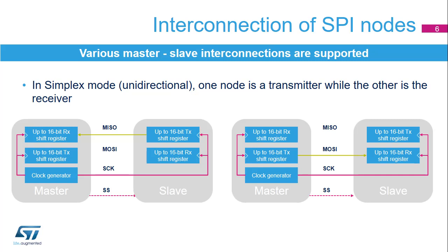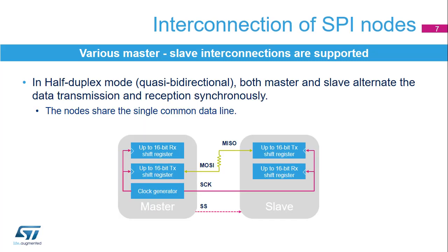Unused SPI pins can be used for other purposes. Half duplex mode integrates the previous two modes, sharing a single line for data exchanges, and data flows in a single direction at a time. There is a cross-connection between the master MOSI and the slave MISO pins in this mode. The master and slave have to alternate their transmitter and receiver roles synchronously when having a common data line. It is common to add a serial resistor on the half duplex data line between MISO and MOSI pins to prevent possible temporary short-circuit connection, since master and slave nodes are not usually synchronized.